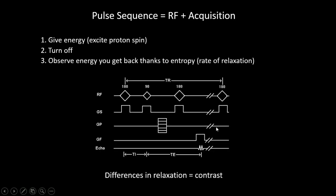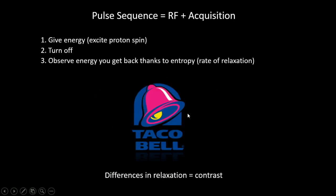Here's the basic schematic of a given pulse sequence. You can see our radio frequency pulses — the x-axis is time — and we've got our different gradients that are reading back information. Keep in mind that this is the Taco Bell of MRI sequence explanations: it's going to look good enough on the outside, you'll get the gist of it, but you really don't want to get too into the nitty gritty.